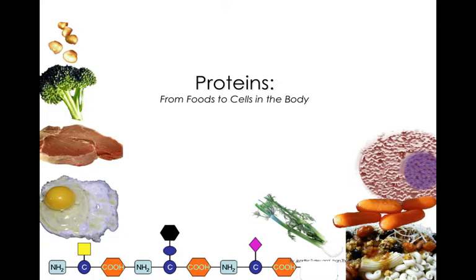Our body makes proteins to repair tissue, to maintain tissue, to provide structure for cells in our muscles, our brain, our organs, as well as the proteins that are used in synthesis of enzymes, immune function, hormones, and in our blood.